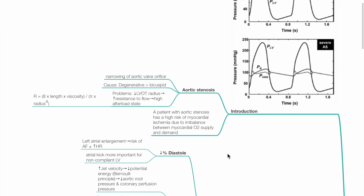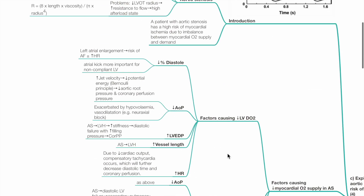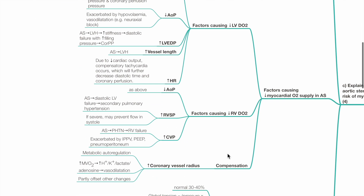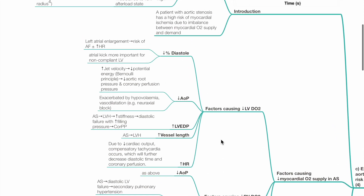A patient with aortic stenosis has a high risk of myocardial ischemia due to an imbalance between myocardial oxygen supply and demand. Factors causing reduced myocardial oxygen supply include reduced left ventricular delivery of oxygen, beginning with reduced diastolic time.